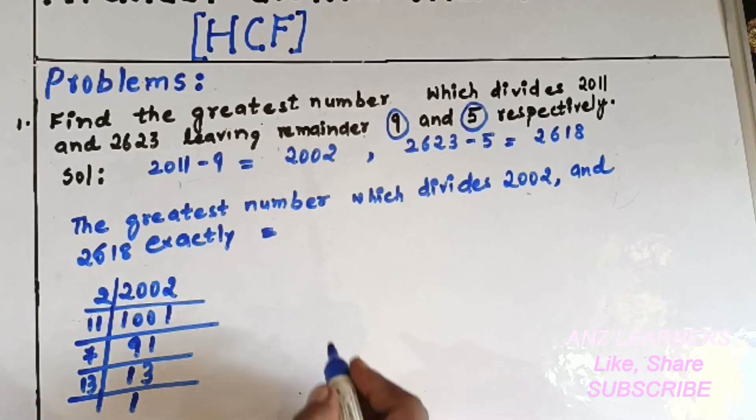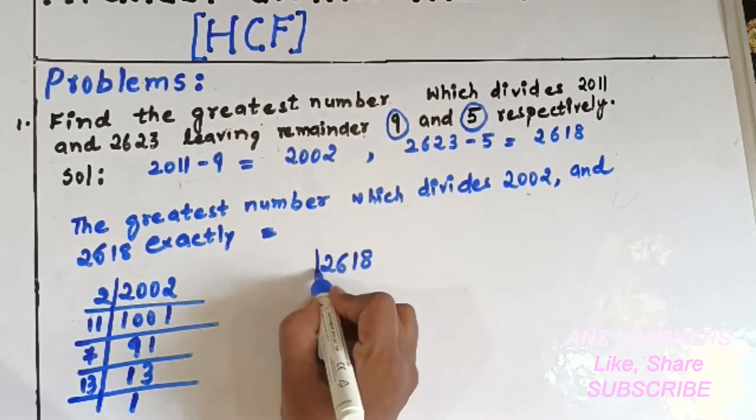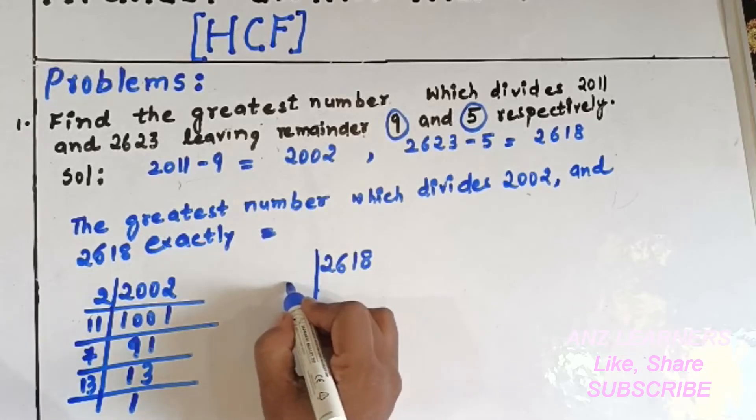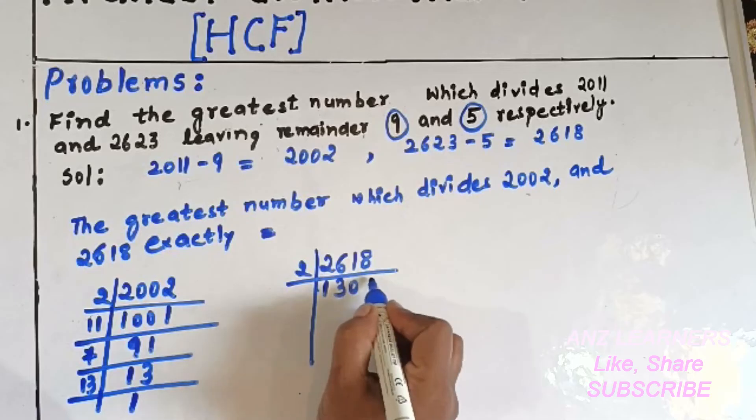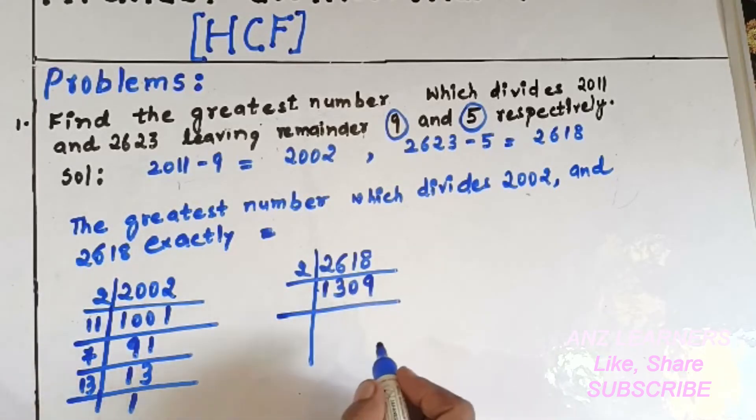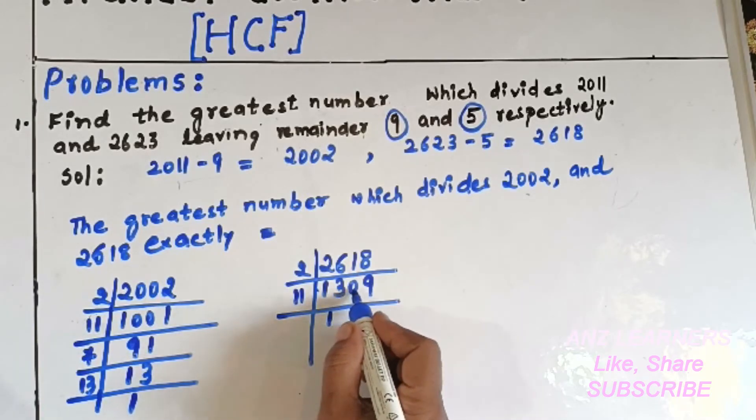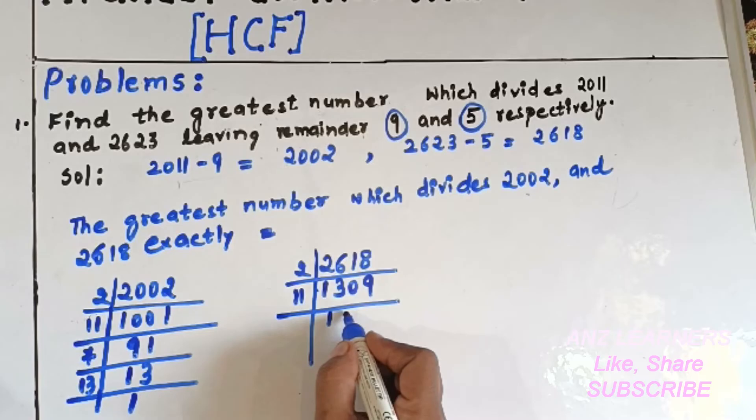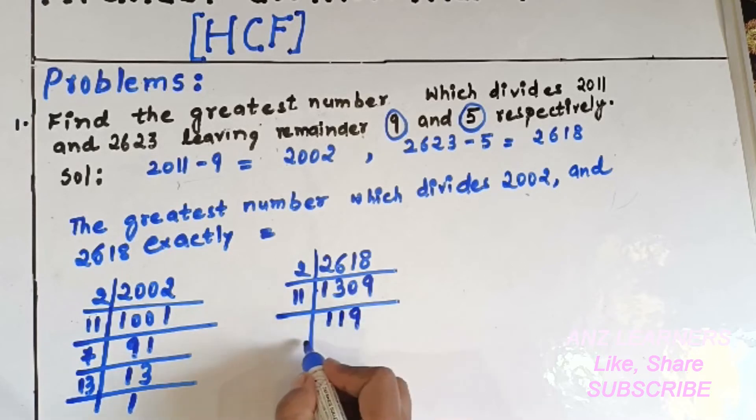For 2618, the factors will be 2, 1309, then 11, 119...